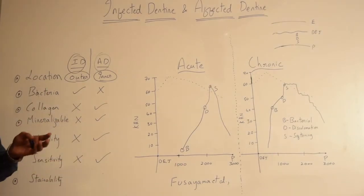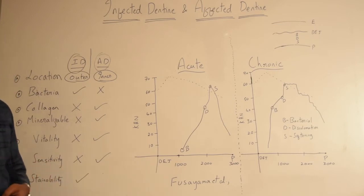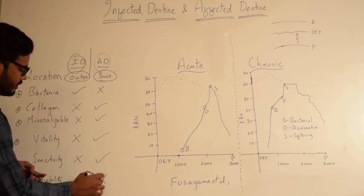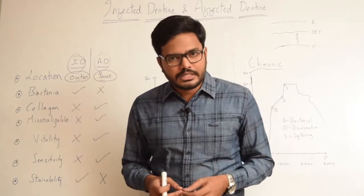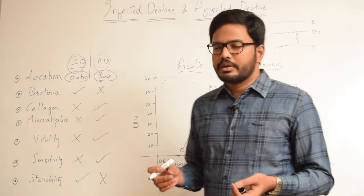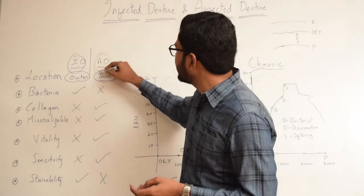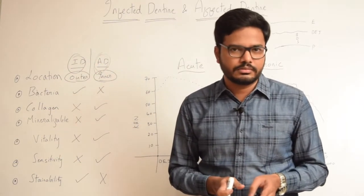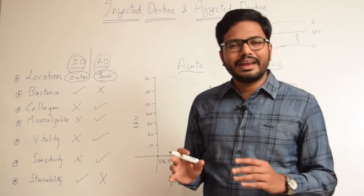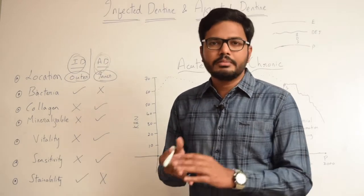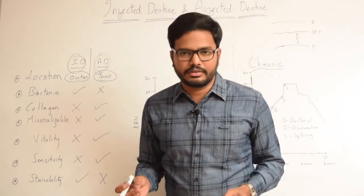Coming to stainability: if you use different kinds of caries detector dyes, infected dentin takes up the stain and affected dentin doesn't take up any stain. Apart from these changes, another noticeable difference is that in case of affected dentin there is mineral deposition within the tubules, whereas in case of infected dentin there is no mineral deposition but the entire tissue becomes more granular, teeming with a great many bacteria. So these are a few differences between infected and affected dentin.